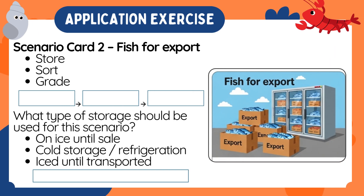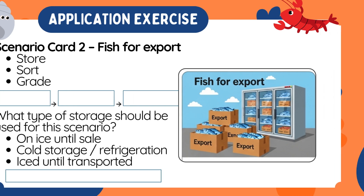Scenario card 2: Fish for export. Steps: store, sort, grade. What type of storage should be used? Choices: On ice until sale, cold storage, refrigeration, or iced until transported.